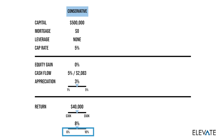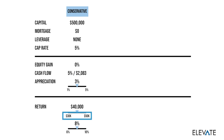So based on a $500,000 investment, we would have monthly cash flows of around $2,000 and an annual return between $35,000 to $45,000.